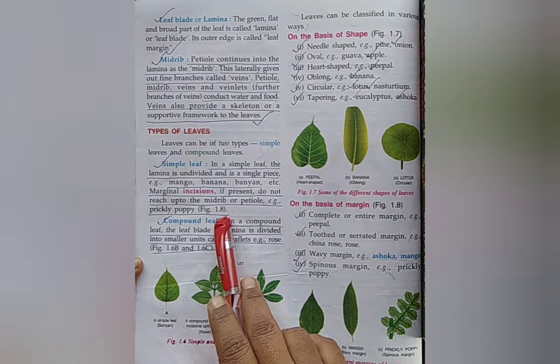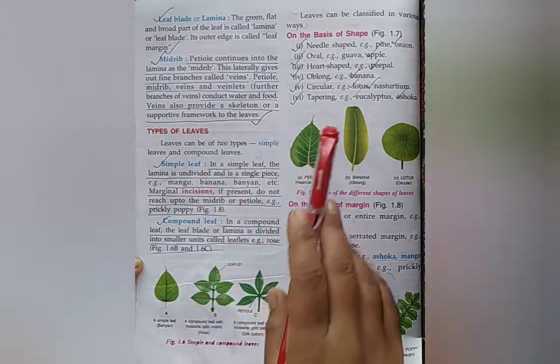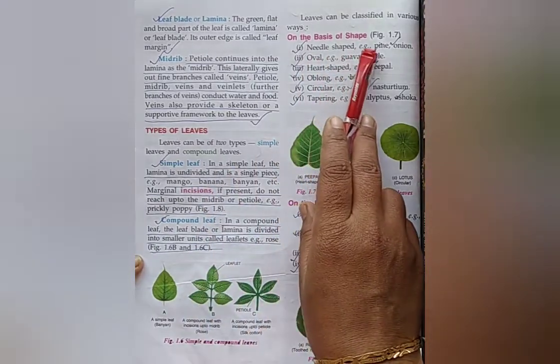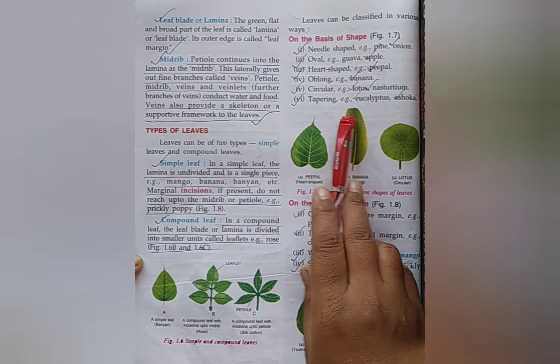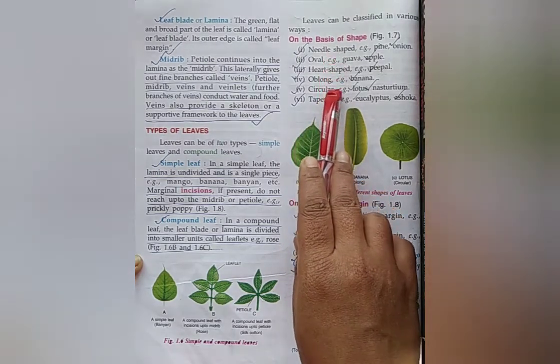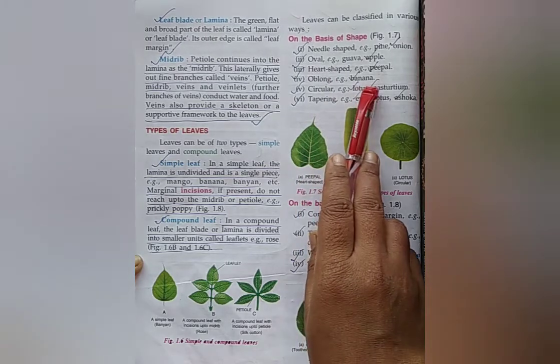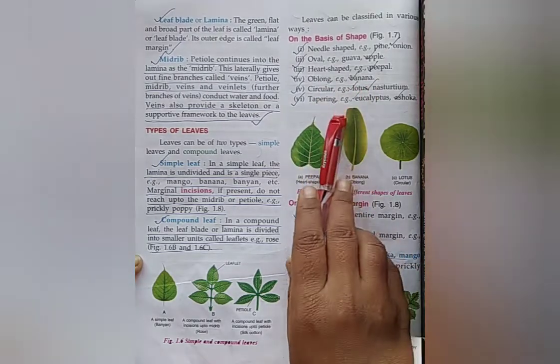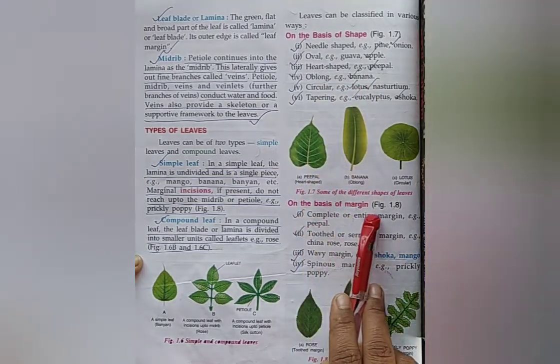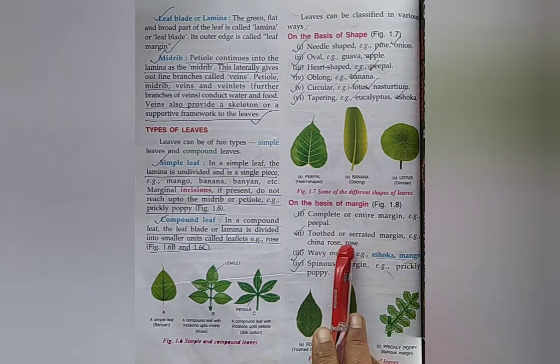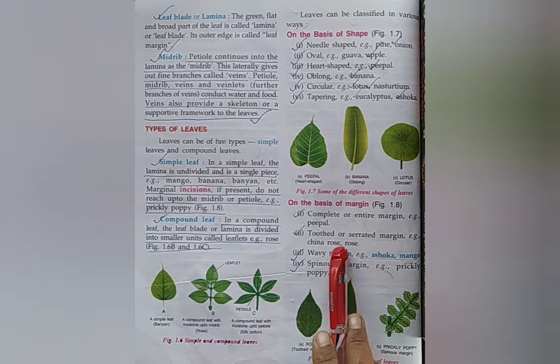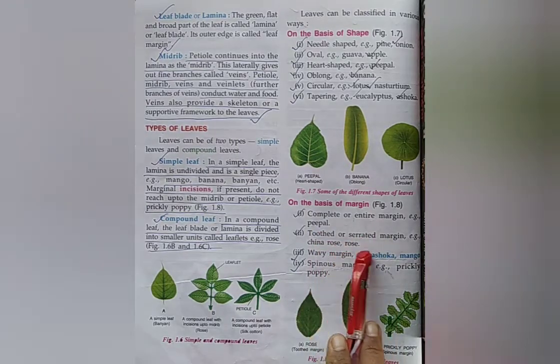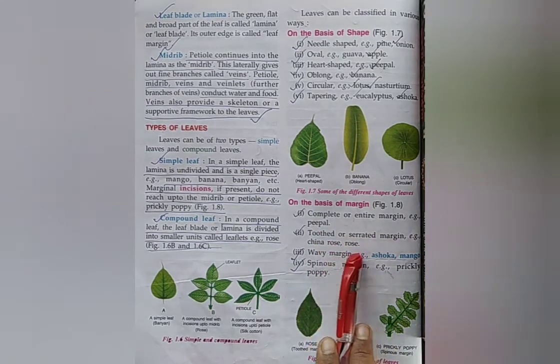On the basis of shape. Question: Write the name of plants on the basis of leaf shape. Next, on the basis of margin. Question: Next, complete or entire margin, toothed or serrated margin, china rose, rose.